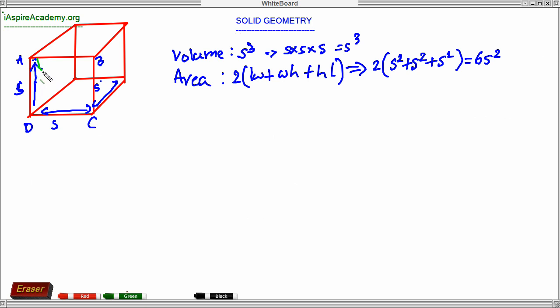This line, if you apply Pythagorean theorem, the face diagonal, which is AC, a diagonal of a surface, if you apply Pythagorean theorem of triangle ADC, what you get is S square plus S square. That means S root 2.